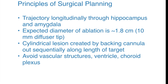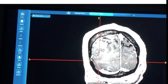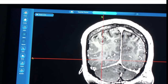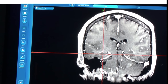The principles of surgical planning involve creating a trajectory that longitudinally passes through the hippocampus and the amygdala. The anticipated diameter of the ultimate ablation is about 1.8 centimeters using the 10-millimeter diffuser tip. This allows creation of a cylindrical lesion by backing the cannula out sequentially and creating sequential burns along the trajectory. The trajectory needs to be planned to avoid vascular structures, the ventricle, and the choroid plexus. This is the probe's eye view showing the trajectory on the post-contrast T1 MRI.